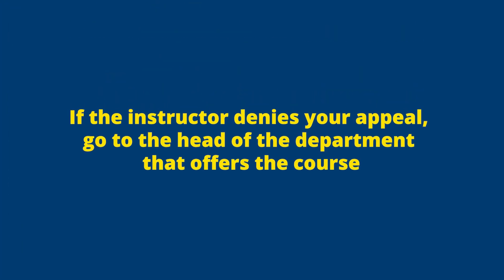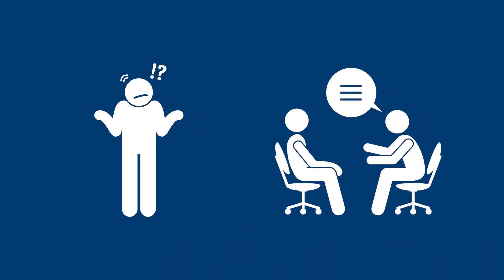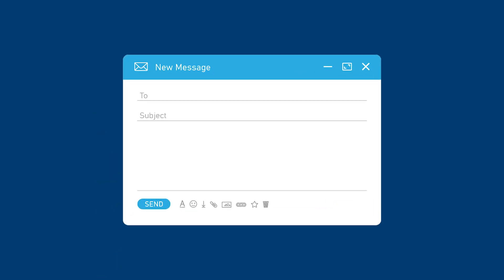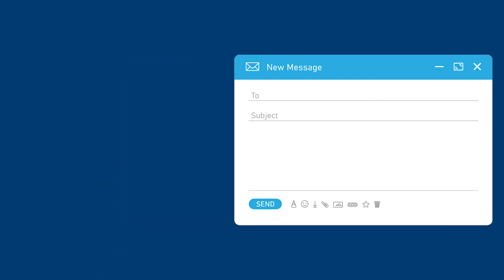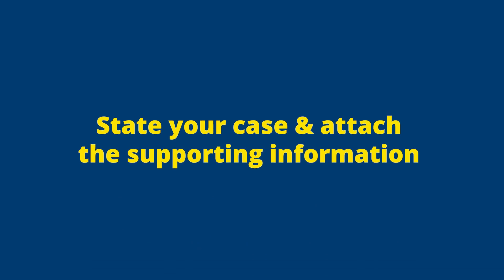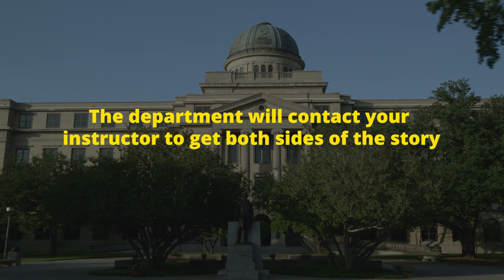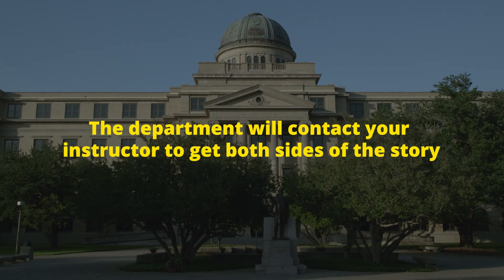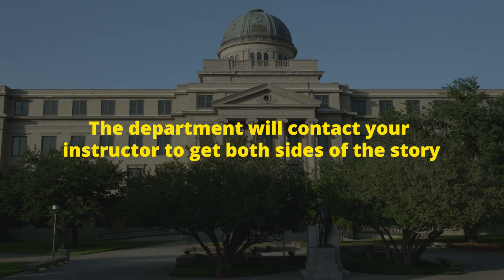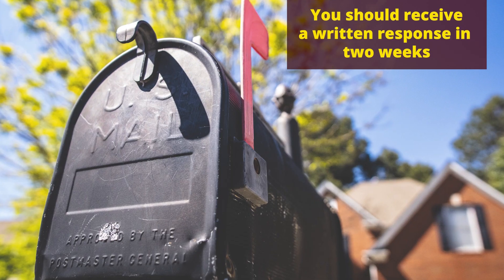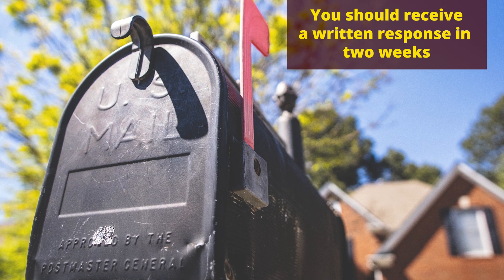If the instructor denies your appeal, the next step is to appeal to the head of the department that offers the course. If you don't know who this is, ask your instructor or check the department website. The department head will want the appeal in writing, so email works best. Again, state your case and attach the supporting information. The department head will contact your instructor to get both sides of the story. At the end of a reasonable amount of time, usually about two weeks, you should get a decision in writing.